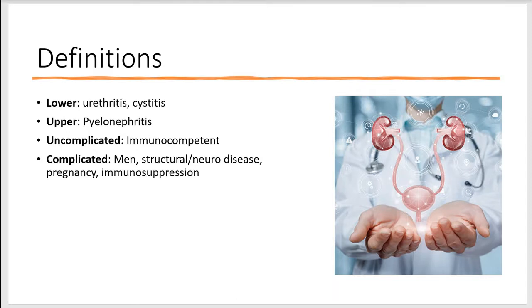Some different definitions. When talking about UTI, you think about lower, upper, uncomplicated, and complicated. Lower involves the urethra and the bladder; the upper involves the kidneys. Uncomplicated means the patient is immunocompetent with no structural or neural disease. Complicated means mostly in men, patients who have structural or neural disease, who are pregnant, and who are immunosuppressed.